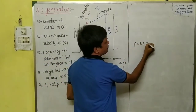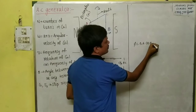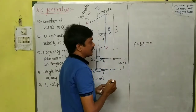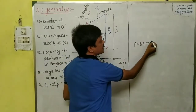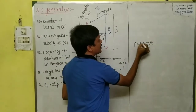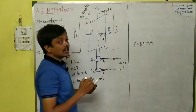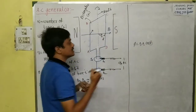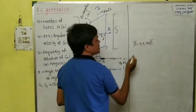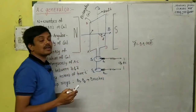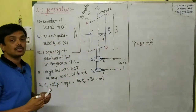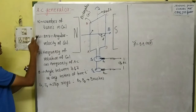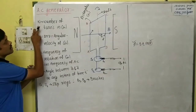...φ = BA cosθ, where θ is the angle between the field vector B and the area vector A. When the coil rotates, the angle between B and A changes. When the angle changes, the flux changes, and the change in flux induces EMF in the coil.